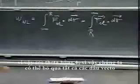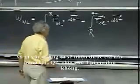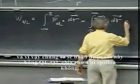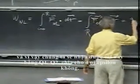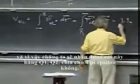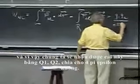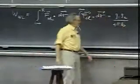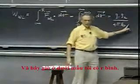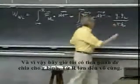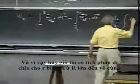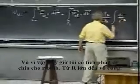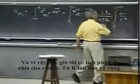And so, we would get then that this equals q one, q two divided by four pi epsilon zero. And now I have downstairs here an R squared. And so, I have the integral now dr divided by R squared from capital R to infinity.